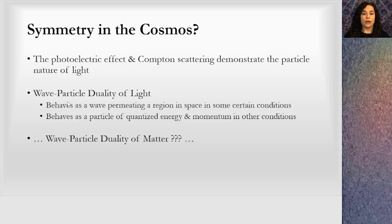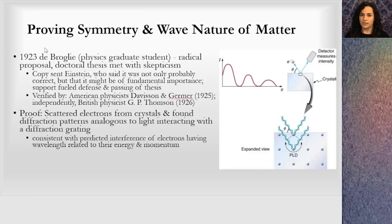The wave-particle duality says that light behaves as a wave permeating a region of space under some conditions, and it behaves as a particle of quantized energy and momentum in other conditions. So could we get matter to do this? Could we get particles to do this? It's not intuitive that a particle would act like a wave. So proving this symmetry was actually kind of an interesting task.